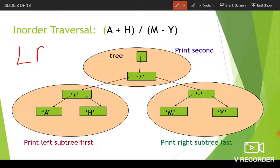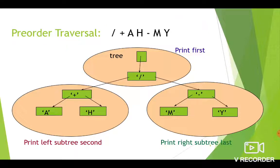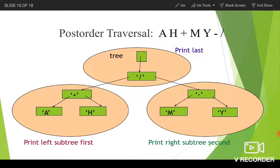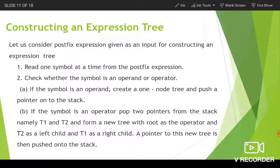In-order traversal: print left subtree, then the root node, then the right subtree. Pre-order traversal: the node is printed first, then we traverse the left subtree, then the right subtree. Post-order traversal: first the left subtree is traversed, then the right subtree, and finally the root node. Now, how will you construct an expression tree?